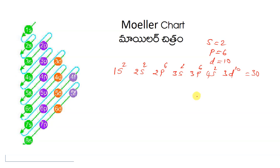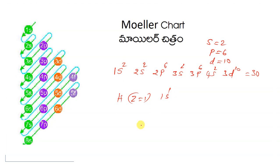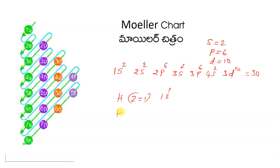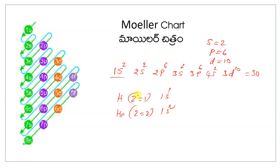If you know the atomic number, you can write it immediately. Suppose first one: hydrogen. Atomic number is 1. Z is equal to 1. That means 1s1. Next, helium. Atomic number is 2. 1s2.